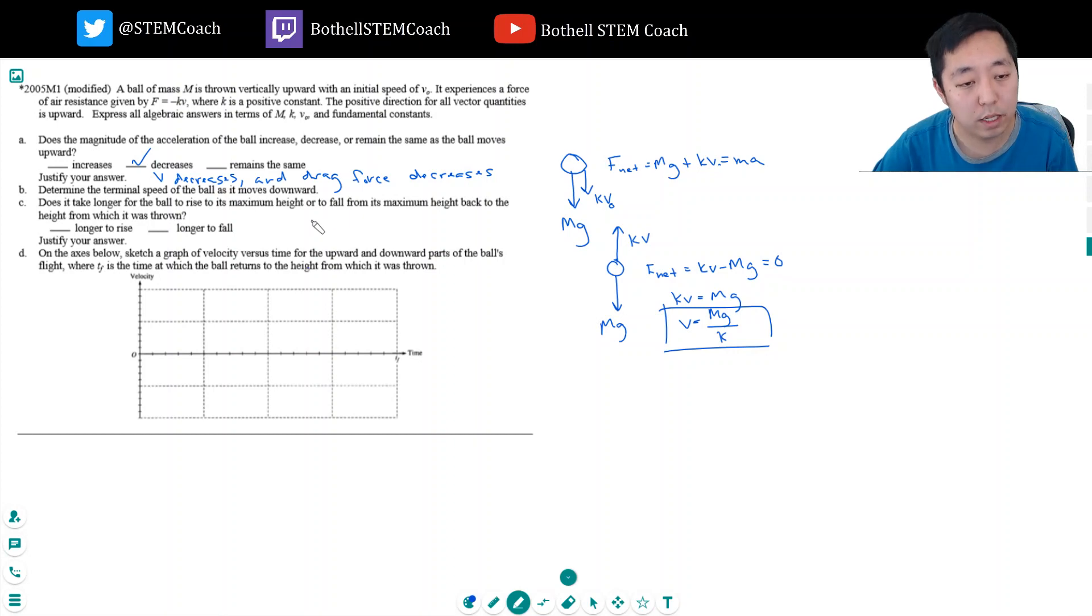Does it take longer for the ball to rise to its maximum height, or to fall from its maximum height back to the height from which it was thrown? What would dictate? So I'm interested in knowing the time it would take for its initial velocity to hit zero. That's sort of the time it would take to hit the top. And then, as it starts falling and going faster, I get a drag on this way.